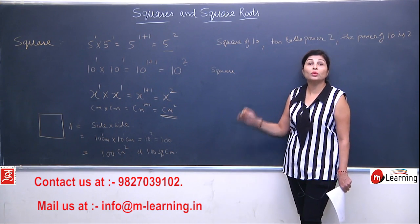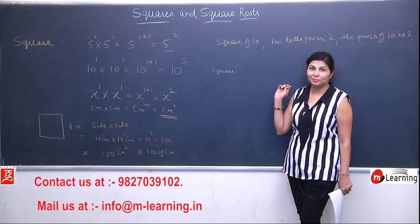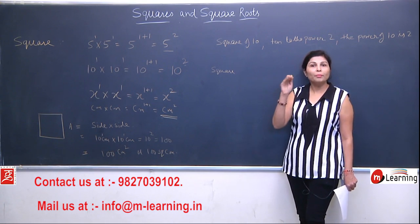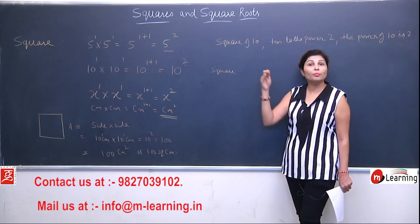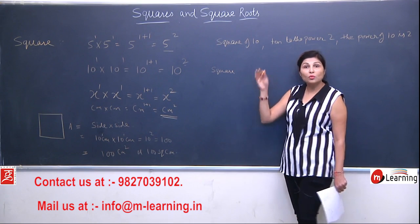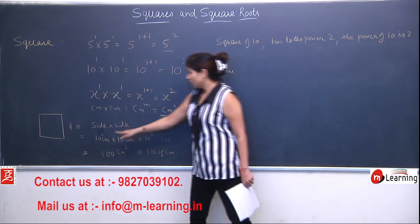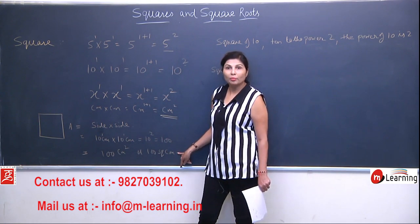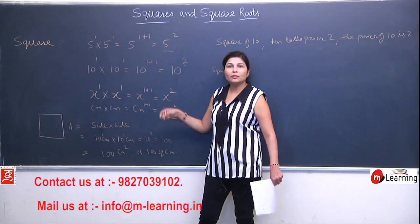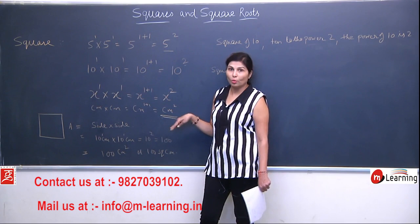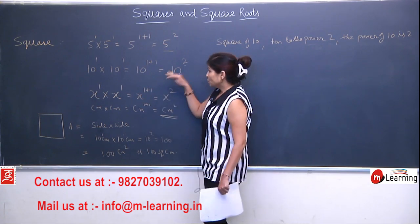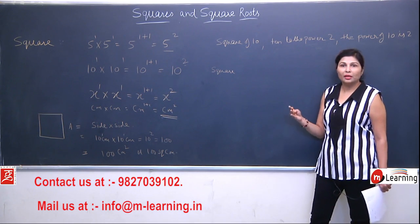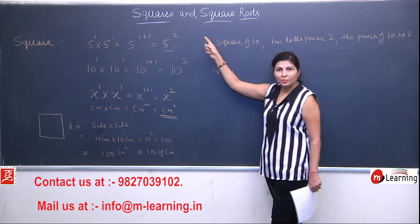I hope now you understand why in area, the unit is always square. We multiplied the numbers, but whatever unit it was — meter — we would write 'square meter'. Why? Because it was multiplying two times. If it was meters, the answer came in meter square, meaning square meter. If it was kilometers, the answer was in square kilometers. So whenever the same number is multiplied by itself, it generates a square, or power of two. And we call that 'square'.